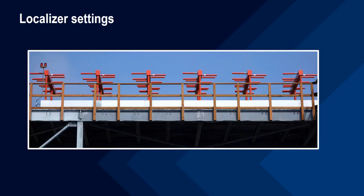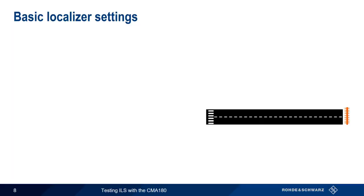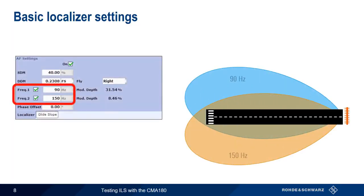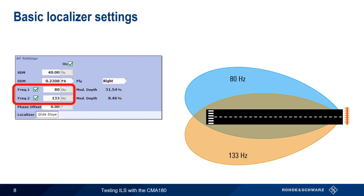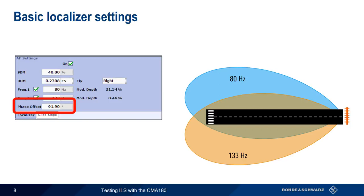Let's start by looking at localizer signal generation. Note that many of the concepts and terms used in localizer signal generation are also used in glide slope signal generation. By default, the CMA-180 generates both the 90 and 150 Hz lobes of the localizer signal. It is, however, possible to uncheck either of these boxes and have the CMA generate only one of the lobes. The frequency of each lobe can be changed individually, and the phase offset defines the phase difference between the signals in each lobe.